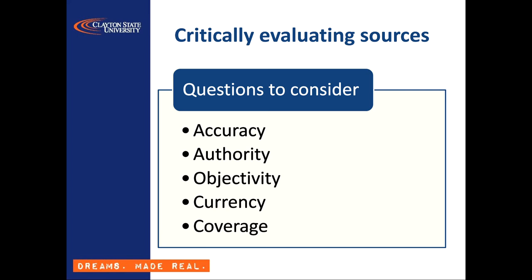The five criteria are the source's accuracy, its authority, its objectivity, its currency, and its coverage. These criteria can be a gauge to the worth of many types of information sources, from books to websites to journal articles.